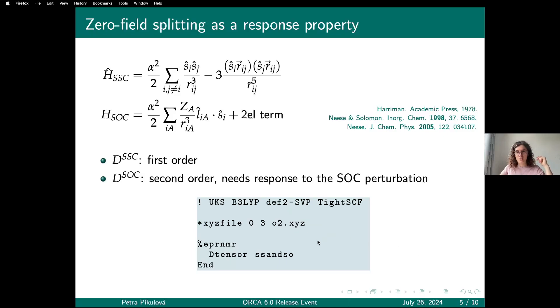You might be interested in looking at the input. This is a simple example for the oxygen molecule. After a DFT calculation, in the EPR/NMR input block I'm saying I want the zero-field splitting and I want both the spin-spin and the spin-orbit contributions to that.